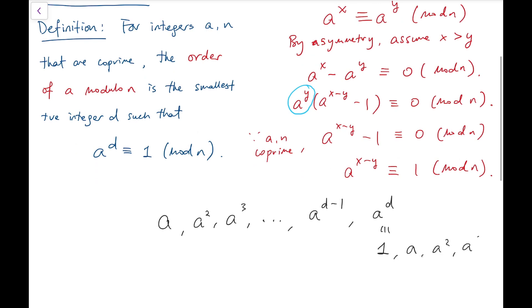So next one is again a, a squared, a cubed, and so on, and we do the mod n operation. So that means it's periodic.